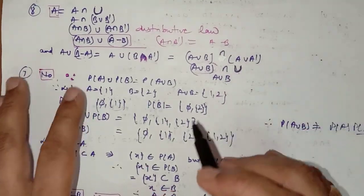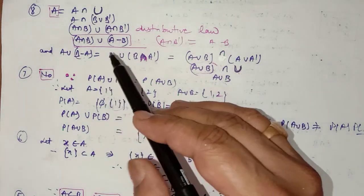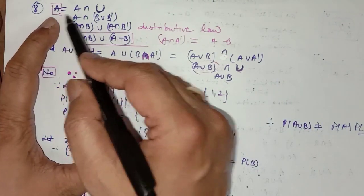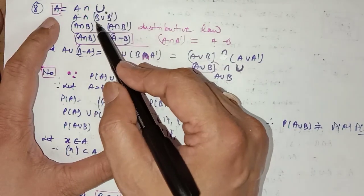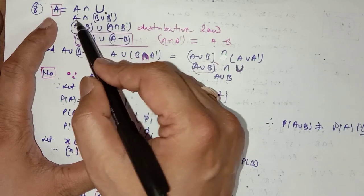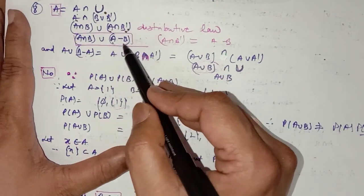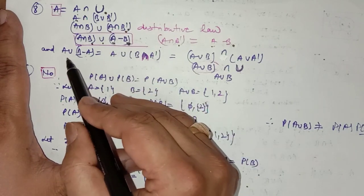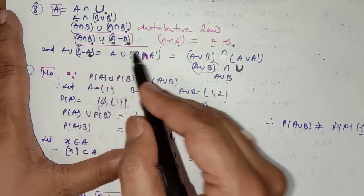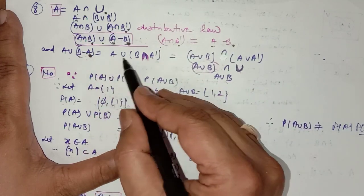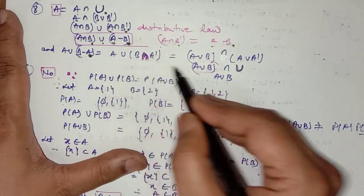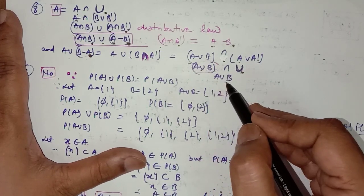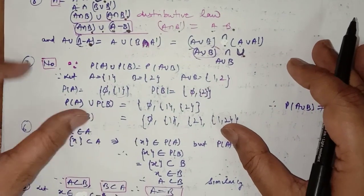In question number 8, prove: (i) A = (A∩B)∪(A−B), and (ii) A∪(B−A) = A∪B. For part (i): start with A = A∩U = A∩(B∪B') = (A∩B)∪(A∩B'). Since A∩B' = A−B, we get A = (A∩B)∪(A−B). For part (ii): A∪(B−A) = A∪(B∩A') = (A∪B)∩(A∪A') = (A∪B)∩U = A∪B. Therefore A∪(B−A) = A∪B.